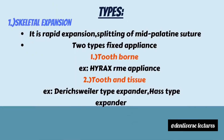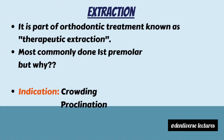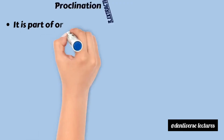Dental alveolar expansion is slow expansion, effective in the early mixed dentition phase. An example is a removable appliance consisting of a split acrylic plate screwing in the midline with retentive clasp and posterior bite block. The third method of space gaining is extraction, part of orthodontic treatment known as therapeutic extraction. The most commonly extracted tooth is the first premolar.